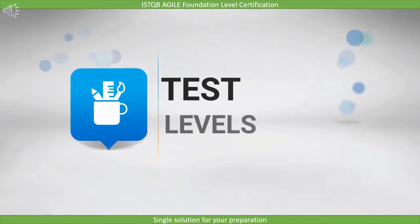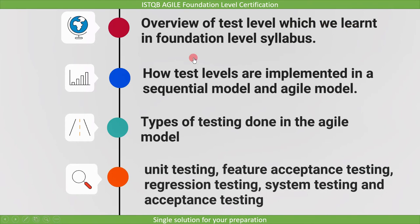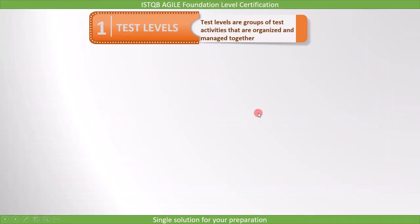In this lecture we will cover test levels. We will cover an overview of test levels which we learned in the foundation level syllabus, then we will see how test levels are implemented in a sequential model and an agile model. Then we will cover types of testing done in the agile model: unit testing, feature acceptance testing, regression testing, system testing, and acceptance testing.